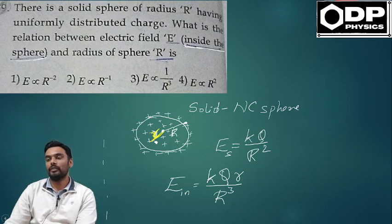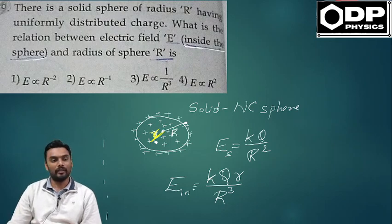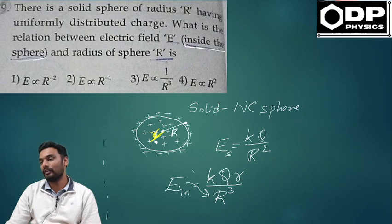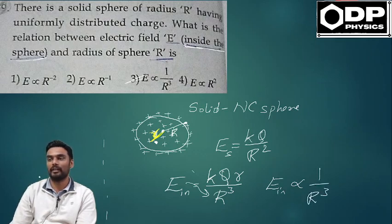And capital R is the radius of the sphere. So from the formula E equals kQr over R cubed, the electric field inside is proportional to one over R cubed.